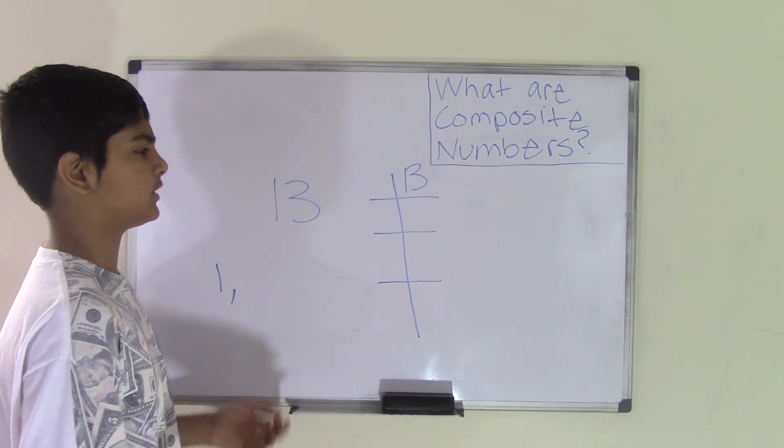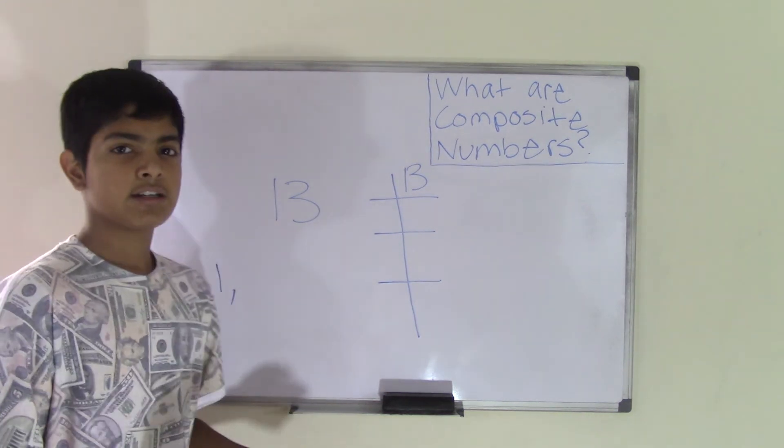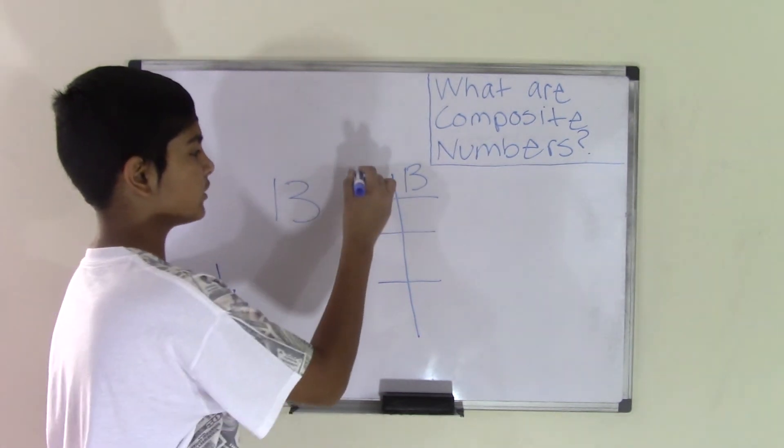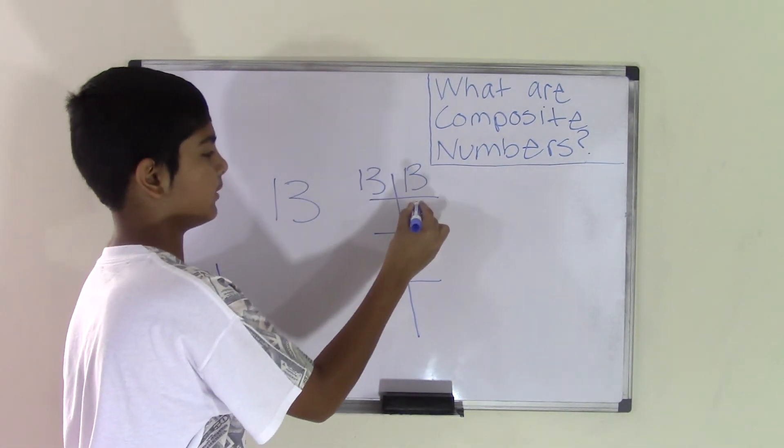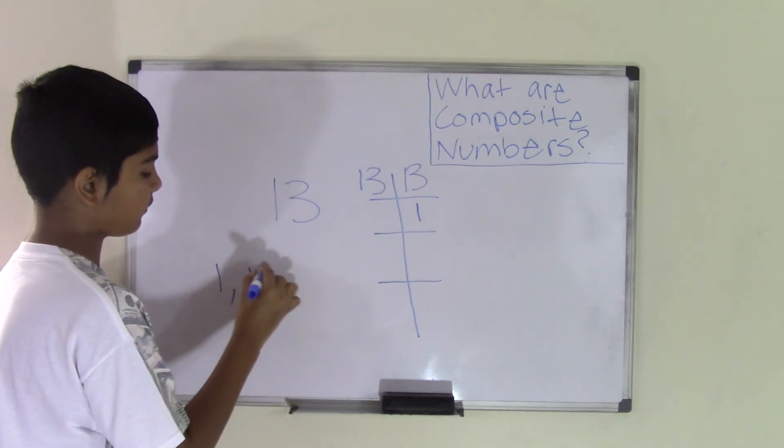So we start from the second number, which is the number 2. But wait, 2 cannot go into 13. Neither can any other number except 13 itself. So 13 itself is the only number that can go into 13 one time. So 13 is the only factor we have.